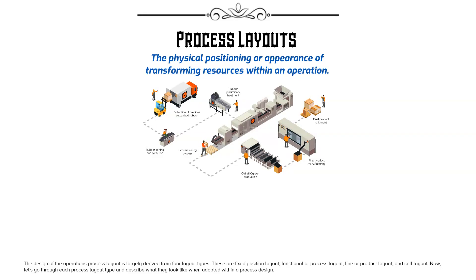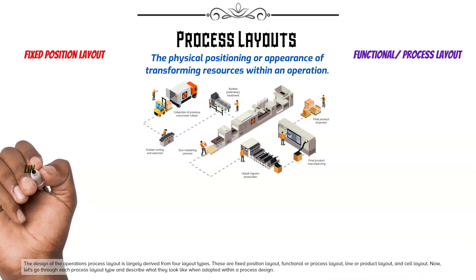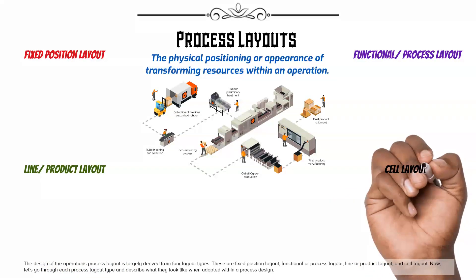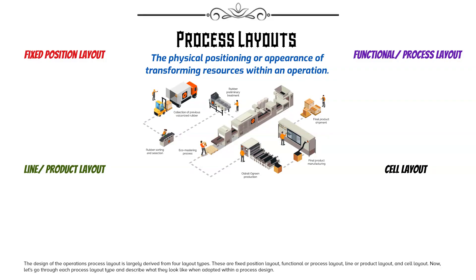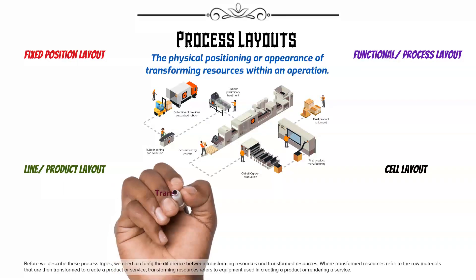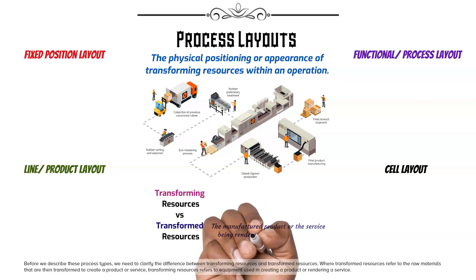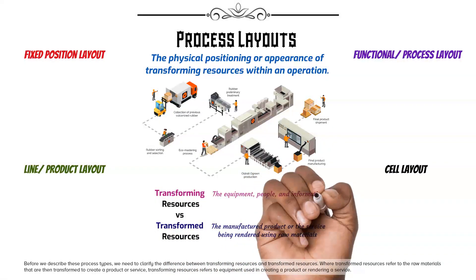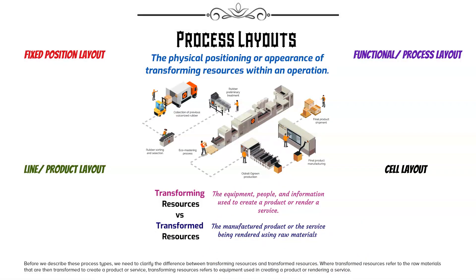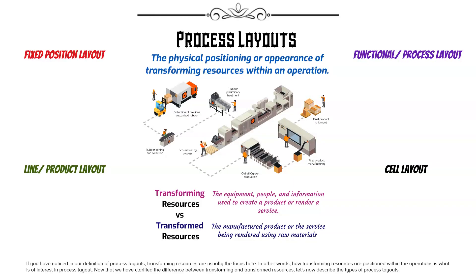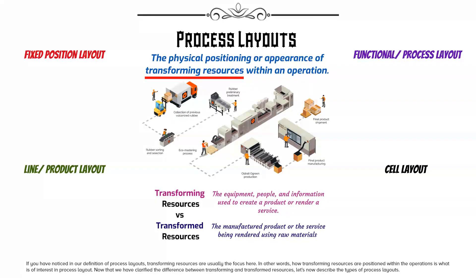The design of the operations process layout is largely derived from four layout types: fixed position layout, functional or process layout, line or product layout, and cell layout. Before we describe these process layouts, we need to clarify the difference between transforming resources and transformed resources. Transformed resources refer to the raw materials that are then transformed to create a product or service, while transforming resources refers to equipment used in creating a product or rendering a service. In process layout, how transforming resources are positioned within the operations is what is of interest.